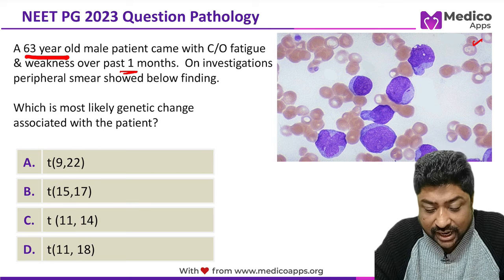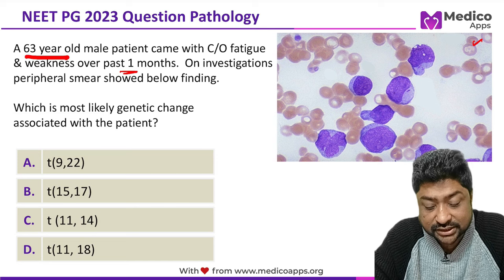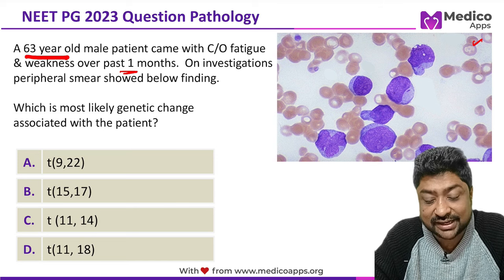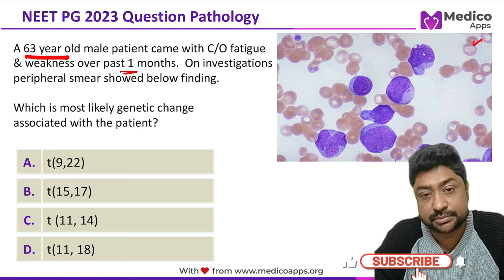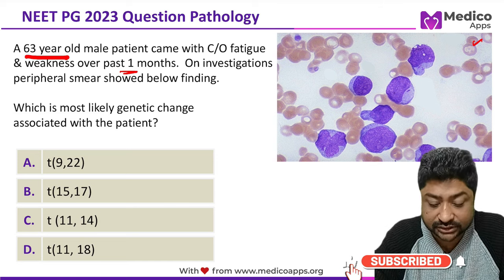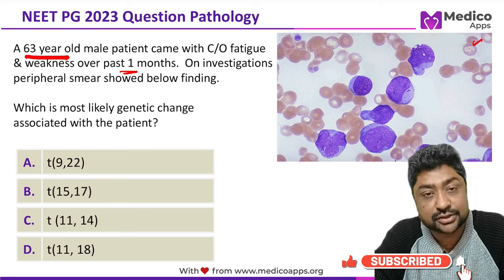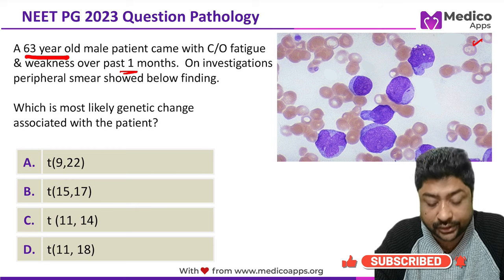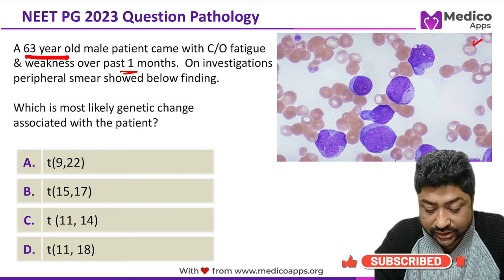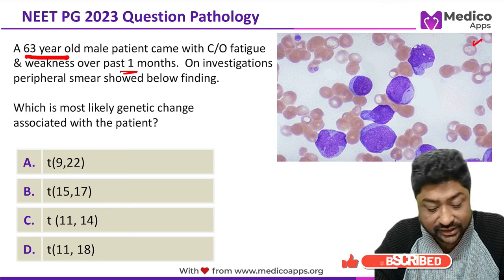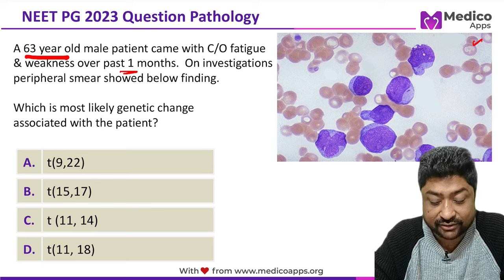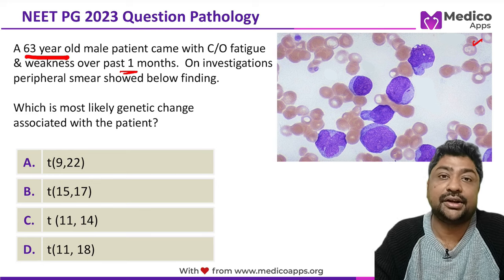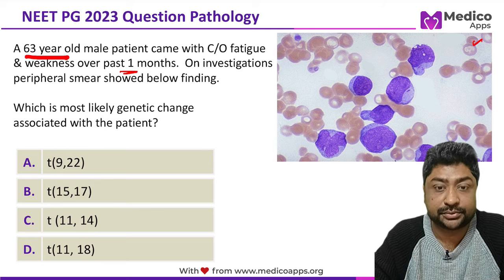The question asks: which of the following is the most likely genetic change associated with this patient? The options are translocation 9;22, translocation 15;17, translocation 11;14, and translocation 11;18.